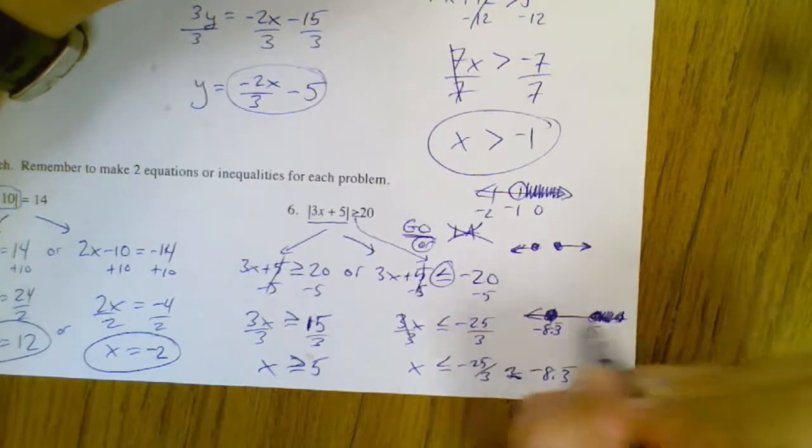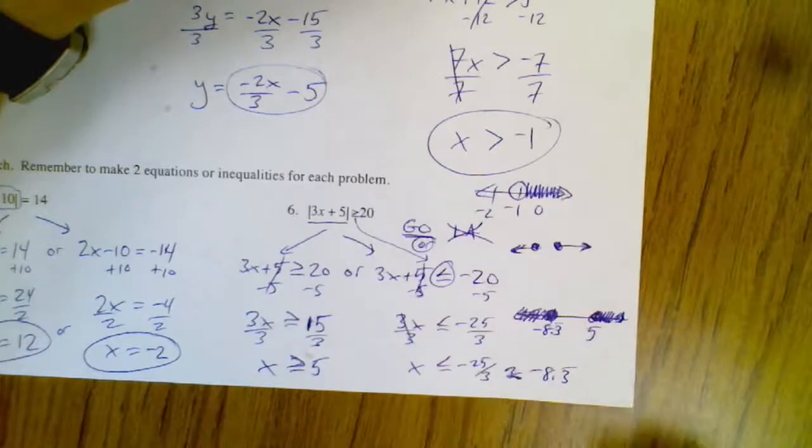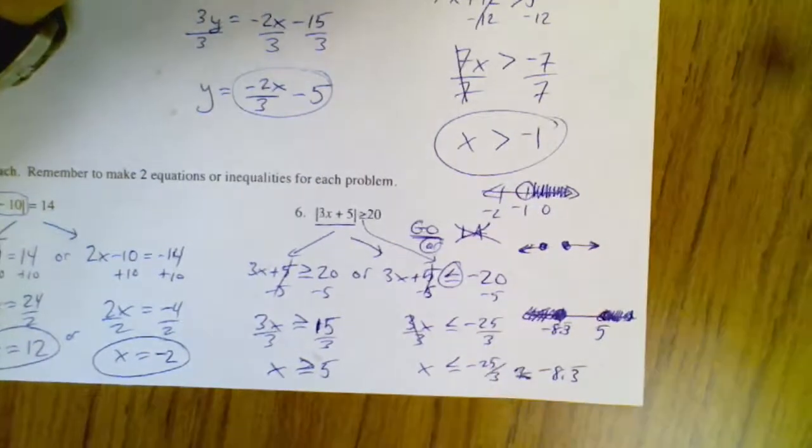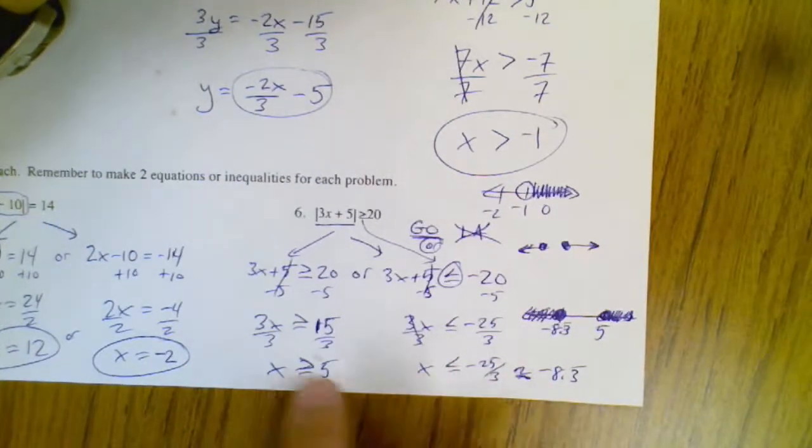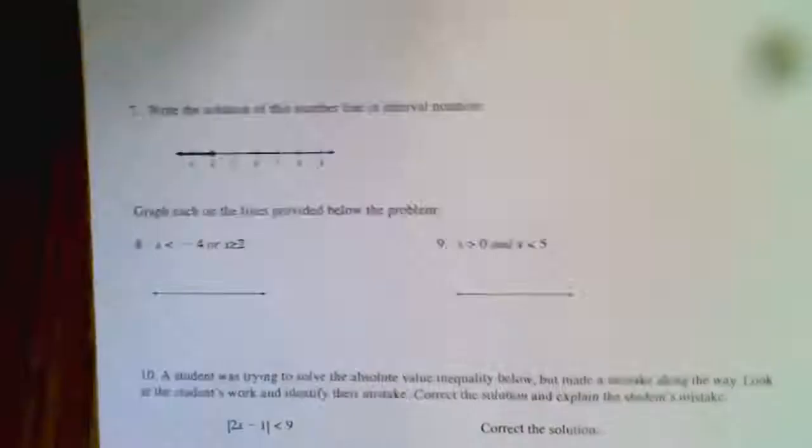you're gonna have 5 up here and negative 8.3 here, and then they're both closed circles and or shade out. So it looks like that, awesome. Or you could say I want x's to be on the greater side for this 5 and I want x's to be on the left side for the negative one. Alright, almost there.